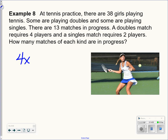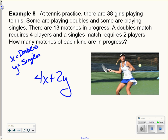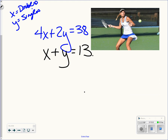So 4x, these are doubles. We'll say x is for the doubles and y is for the singles. So 4x plus 2y. So 4 for every doubles match and 2 for every singles match. And there's 38 people playing. There's x plus y equals 13 because there's 13 total matches. Now that I have my two equations, my two unknowns, now we're going to solve this using either substitution or elimination. I'm going to do elimination because that's what I prefer.